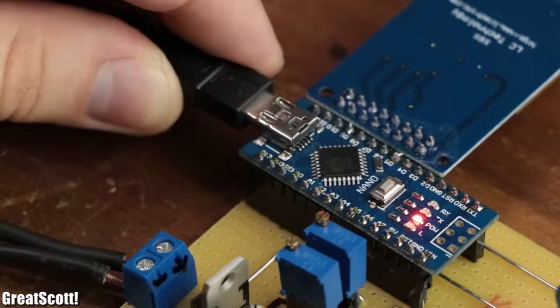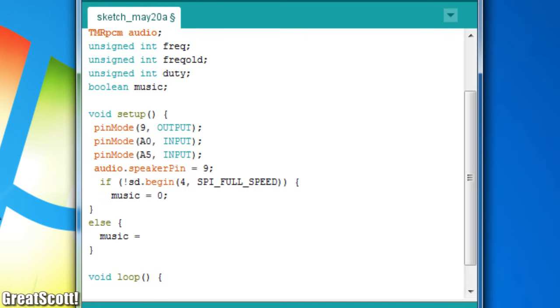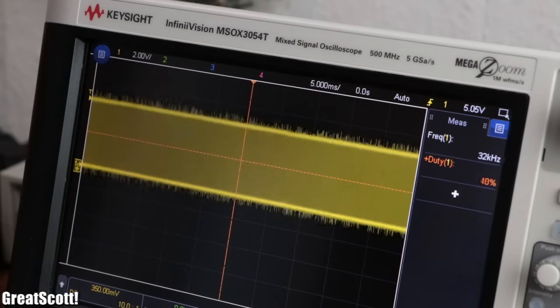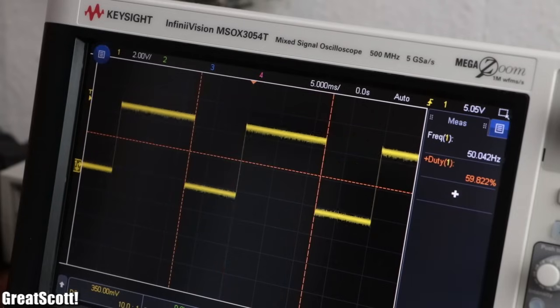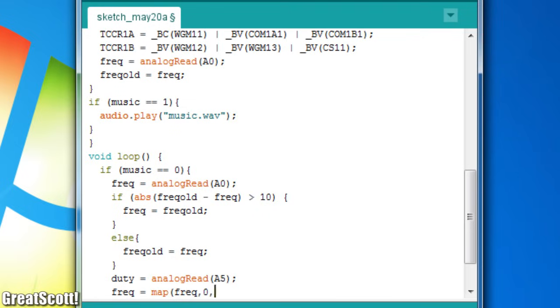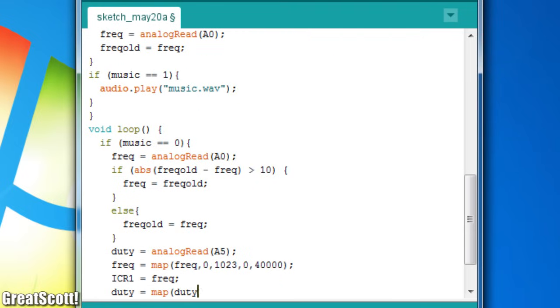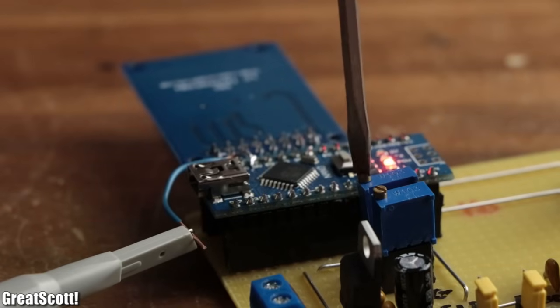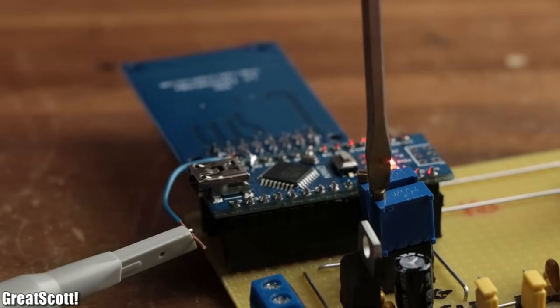But to improve the interrupter even more, I added a couple lines of code which play back music if an SD card is inserted, or create the usual interrupter signal with variable duty cycle and frequency if no SD card is inserted. And with that being done, the interrupter section of the Tesla coil was completed.